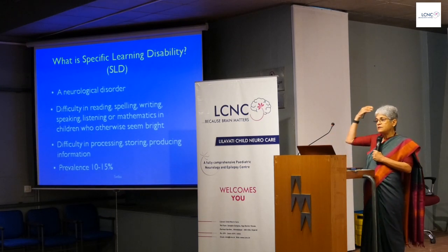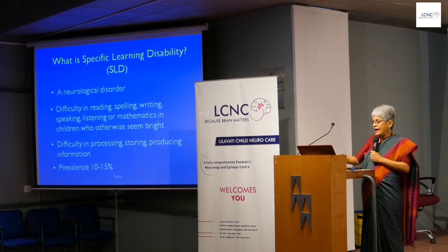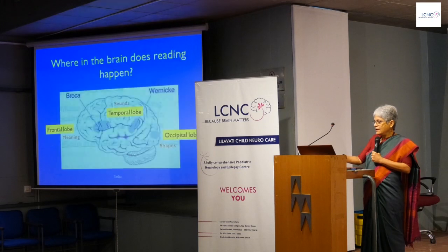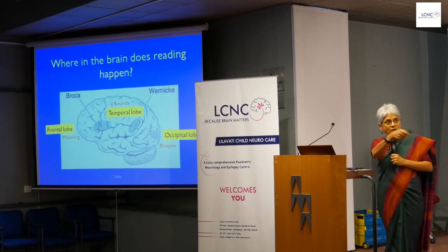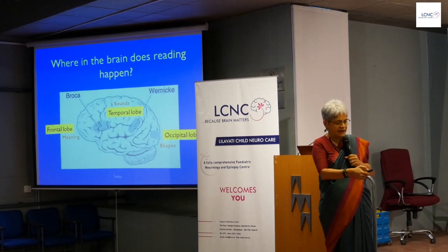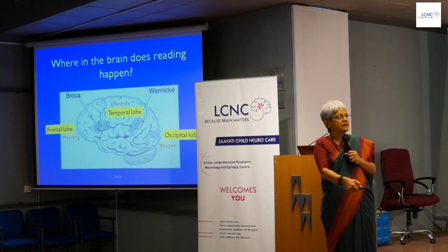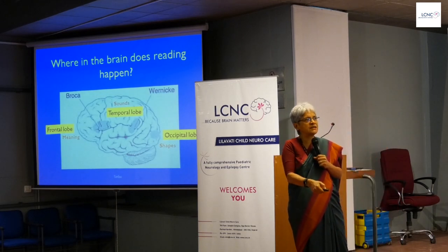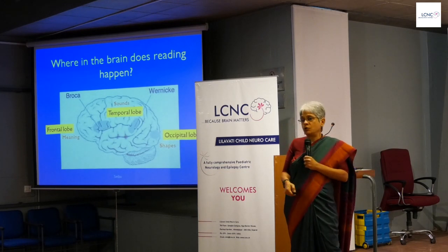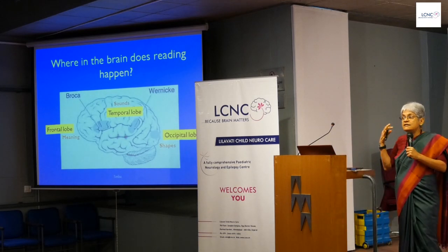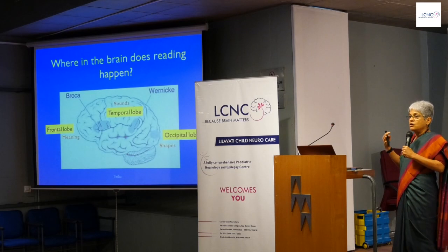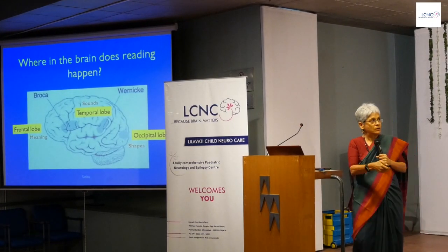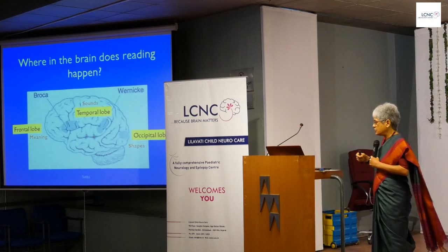SLD affects 10–15% of children. When we read, three parts of the brain are active: the occipital lobe processes what letters look like; the temporal lobe processes the sounds of what you're reading; and the frontal lobe extracts meaning. If there's any problem in this processing — most often in the temporal lobe — children are going to struggle with reading and learning.